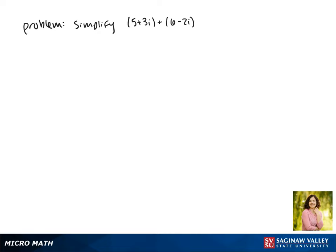Today we'll be simplifying the expression 5 plus 3i plus 6 minus 2i. Let's remember that we can only combine our imaginary or i terms with other i terms, and our real terms with other real terms.